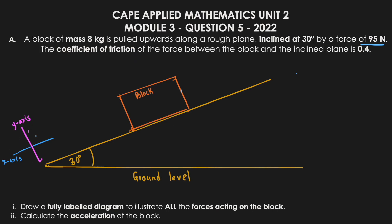The first obvious force is the applied force of 95 newtons pulling the block up the incline at 30 degrees, so the force going up along the surface is 95 newtons. The next force along the x-direction — the slanted x-axis — is friction.